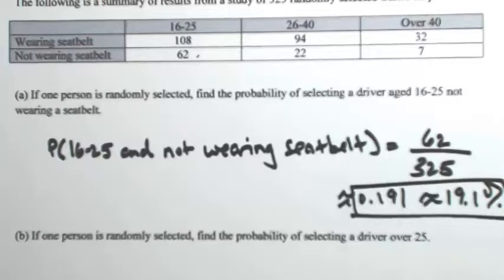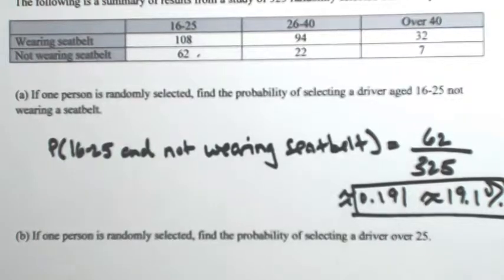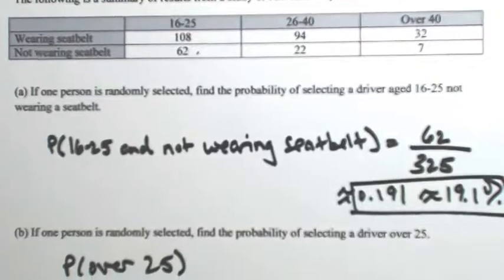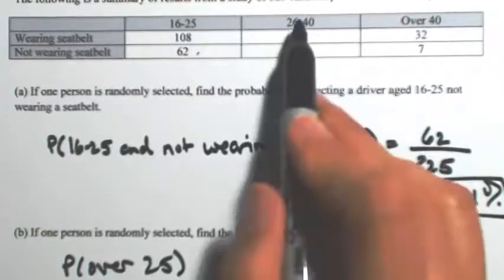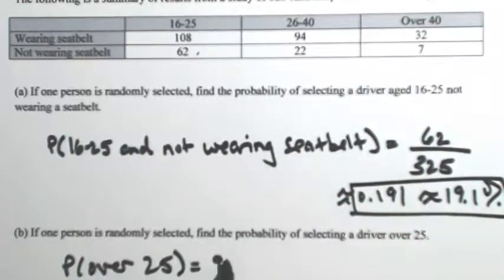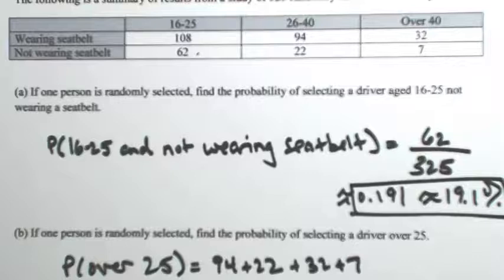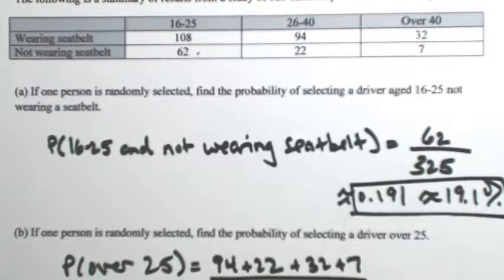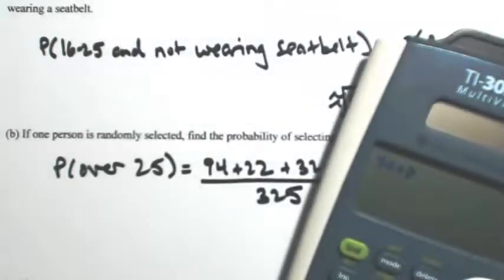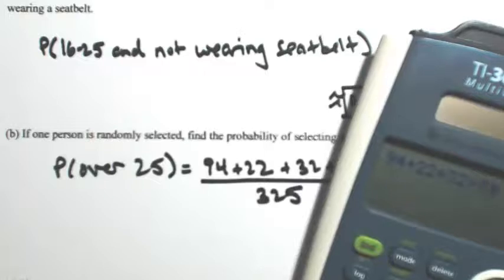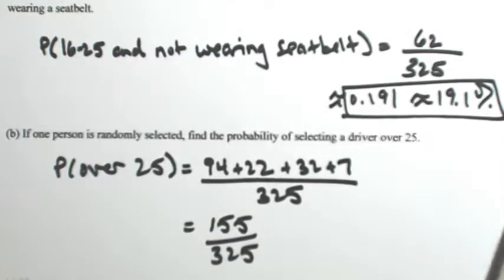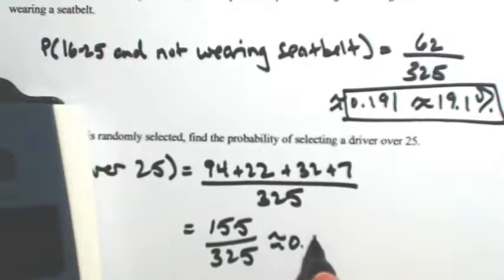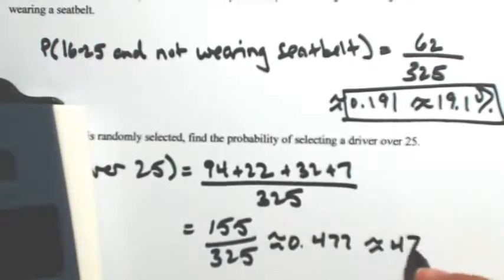In this next one, we want one person selected again. Find the probability of selecting a driver that's over 25. Looking at our table, that's actually two columns — the people that are over 25 are 26 to 40 and also over 40. So we're going to use all of the people in those last two columns: 94 and 22 for 26 to 40, and 32 and 7. All of those drivers are over 25, out of everybody which is 325. So 94 plus 22 plus 32 plus 7 is 155. Dividing that out, we get about 0.477, or about 47.7% probability.